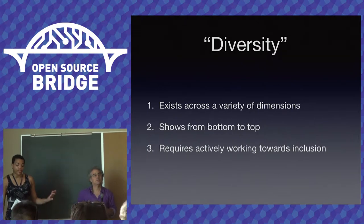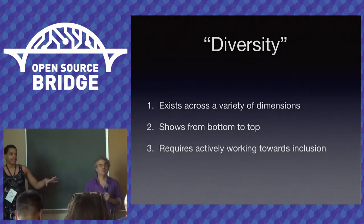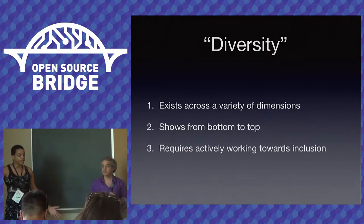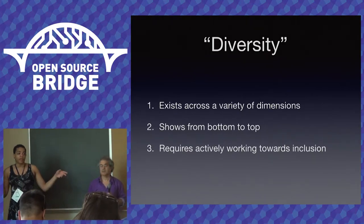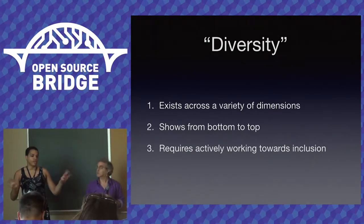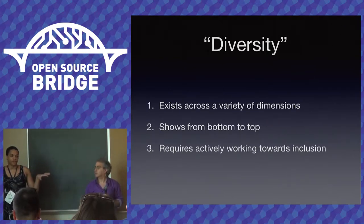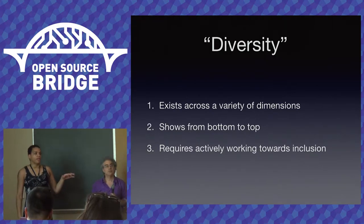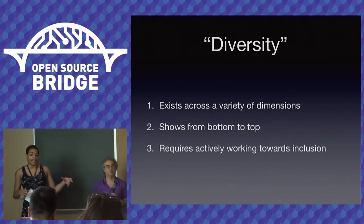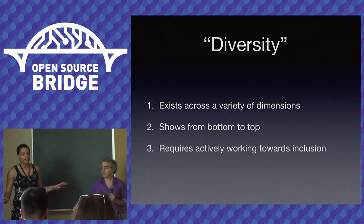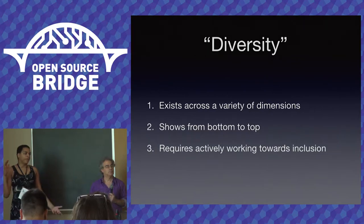For someone to define diversity — and I'm pretty sure Kronda already said this this morning — diversity exists across a variety of dimensions. I keep seeing white women be synonymous with diversity; don't do that. Diversity is non-normative, trans, Black, not American — people forget that non-English-speaking is a diverse group a lot. All of those things, right?